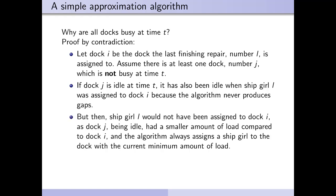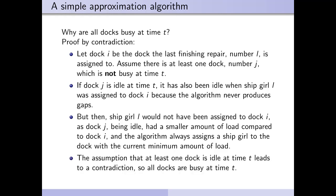But then, the task in question would not have been given to dock i, as dock j has a smaller load and the algorithm always assigns a shipgirl to the dock with the current minimum amount of load. And thus, the assumption that at least one dock is idle at time t leads to a contradiction, so all docks are busy at time t.